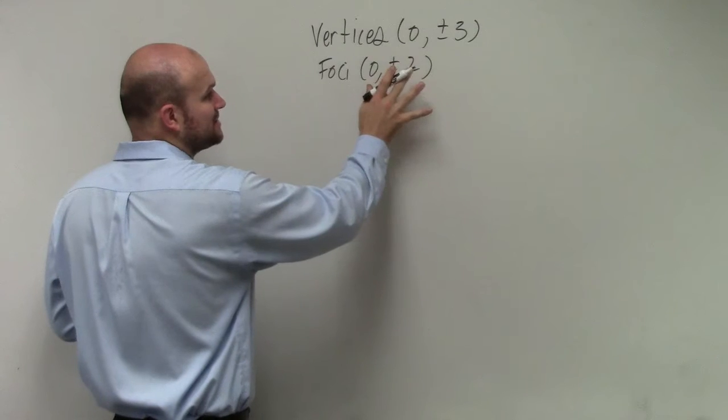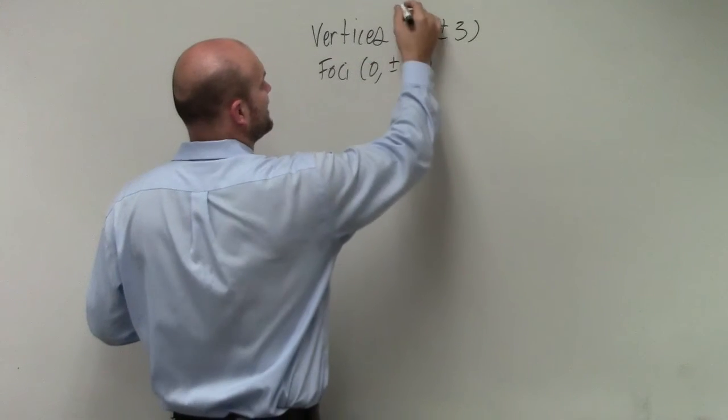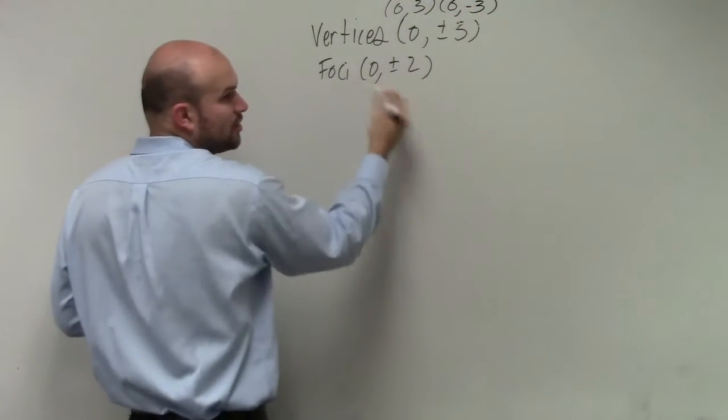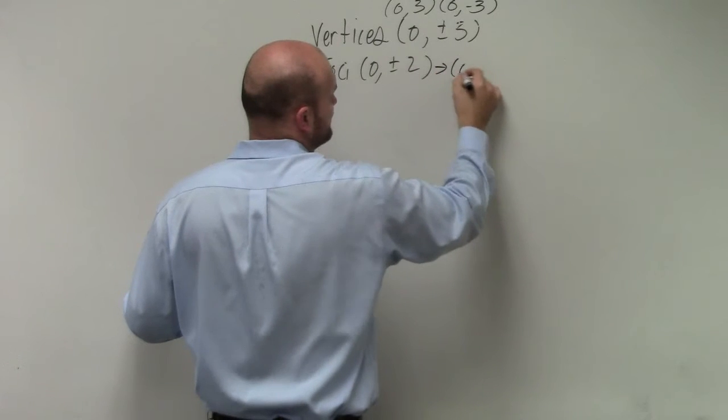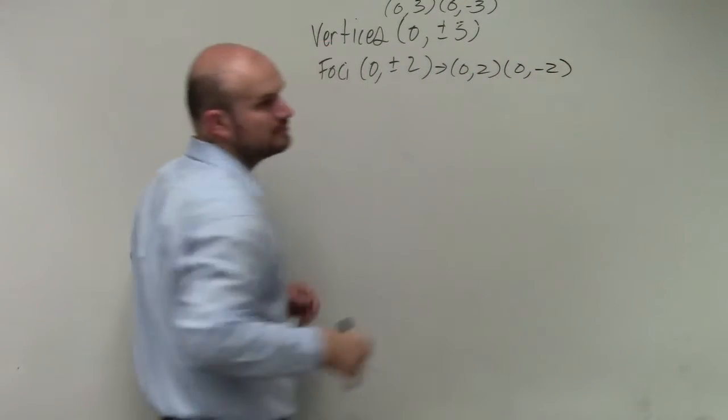So the main important thing I want you guys to understand is when I have 0 plus or minus 3, all that means is I have the point 0, 3 and 0, negative 3. 0 plus or minus 2 just means I have 0, 2 and 0, negative 2. That's all that means.